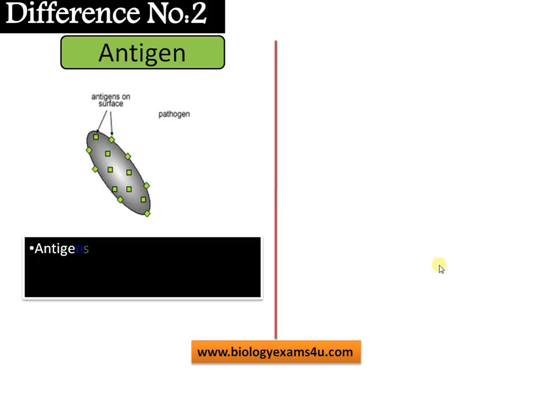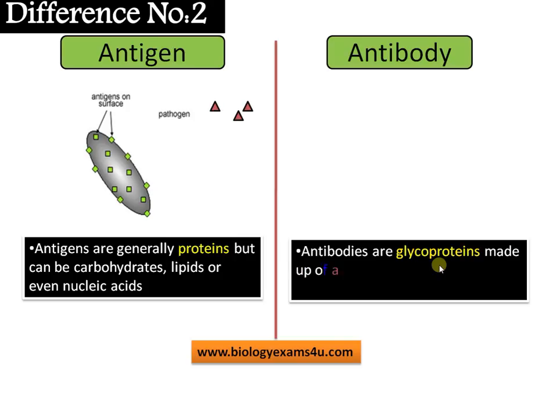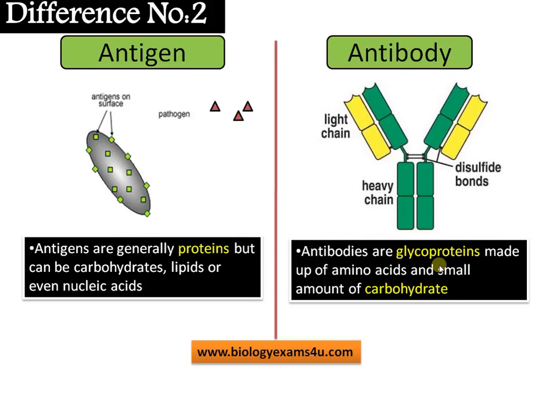Difference number two. Chemically, antigens are generally proteins but can be carbohydrates, lipids, or even nucleic acids. In the case of viruses, carbohydrate polysaccharides can be antigenic. Bacterial polysaccharides are also antigenic — these are some exceptions, but basically they are proteins. Antibodies, on the other hand, are glycoproteins made up of proteins and a small amount of carbohydrates.